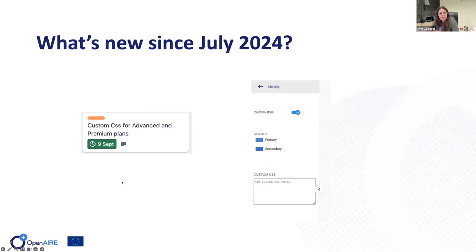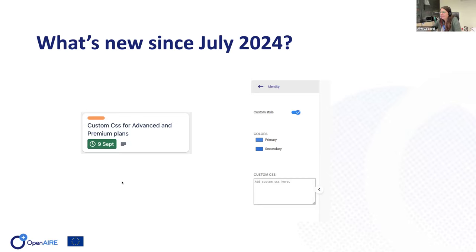In addition, we also added a new and very powerful functionality for gateways that come with an advanced or premium plan: the possibility to override the CSS. You can add your custom CSS in your Community Gateway so that you can change everything that CSS allows. You can experiment and try, and if you have any problems, I can put you in contact with the development team who can provide feedback and suggestions on how to use the functionality in the best way.